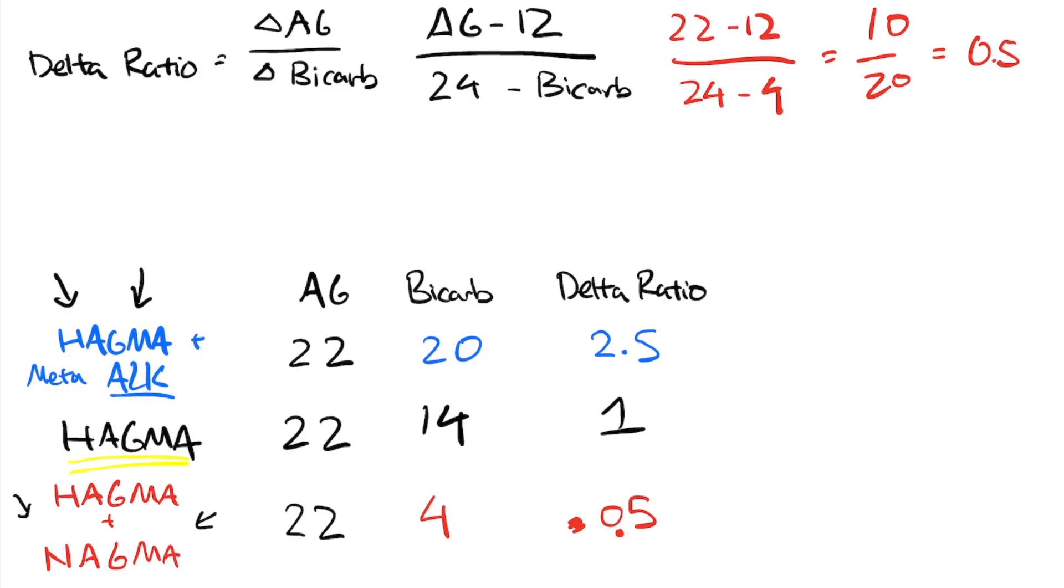So to put the hard guidelines on, anything between 1 to 2, a delta ratio between 1 and 2, is suggestive of a pure HACMA, a pure high anion metabolic acidosis.